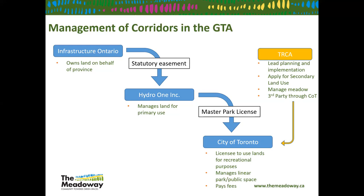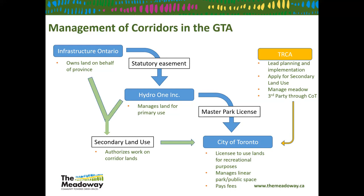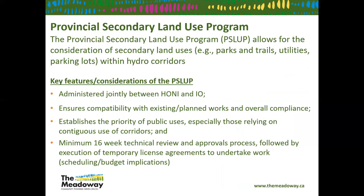The TRCA has an interesting role: we lead planning and implementation of all the meadow restoration and infrastructure development, but we do so in a third-party role. We develop all the applications that are routed through the City of Toronto as licensee, then approved by Hydro One and Infrastructure Ontario through the secondary land use program. This stakeholder structure is intentionally complex — working in these hydro corridors involves a multi-layered landscape you have to navigate.